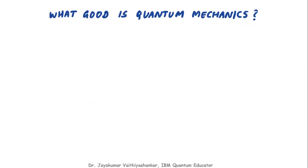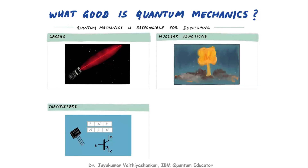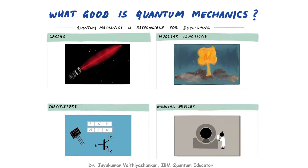What is good about using quantum mechanics? Why are we going to use this technology for our own benefit? Quantum mechanics is responsible for developing applications like creating lasers, nuclear reactions, atom bombs, nuclear fusion, and even better transistors. We can create very accurate medical devices when we are dealing at the quantum level. The results are so good, the accuracy is so good. There are innumerable applications when working at the quantum level.